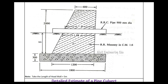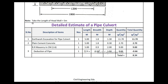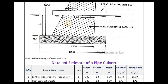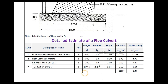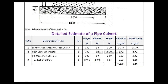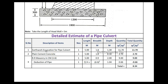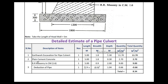For this figure we are going to calculate three items of work: first, earthwork excavation; second, PCC (plain cement concrete); and third, RR masonry. The detailed estimate table has eight columns: serial number, description, numbers, length, breadth, depth, quantity, and total quantity.